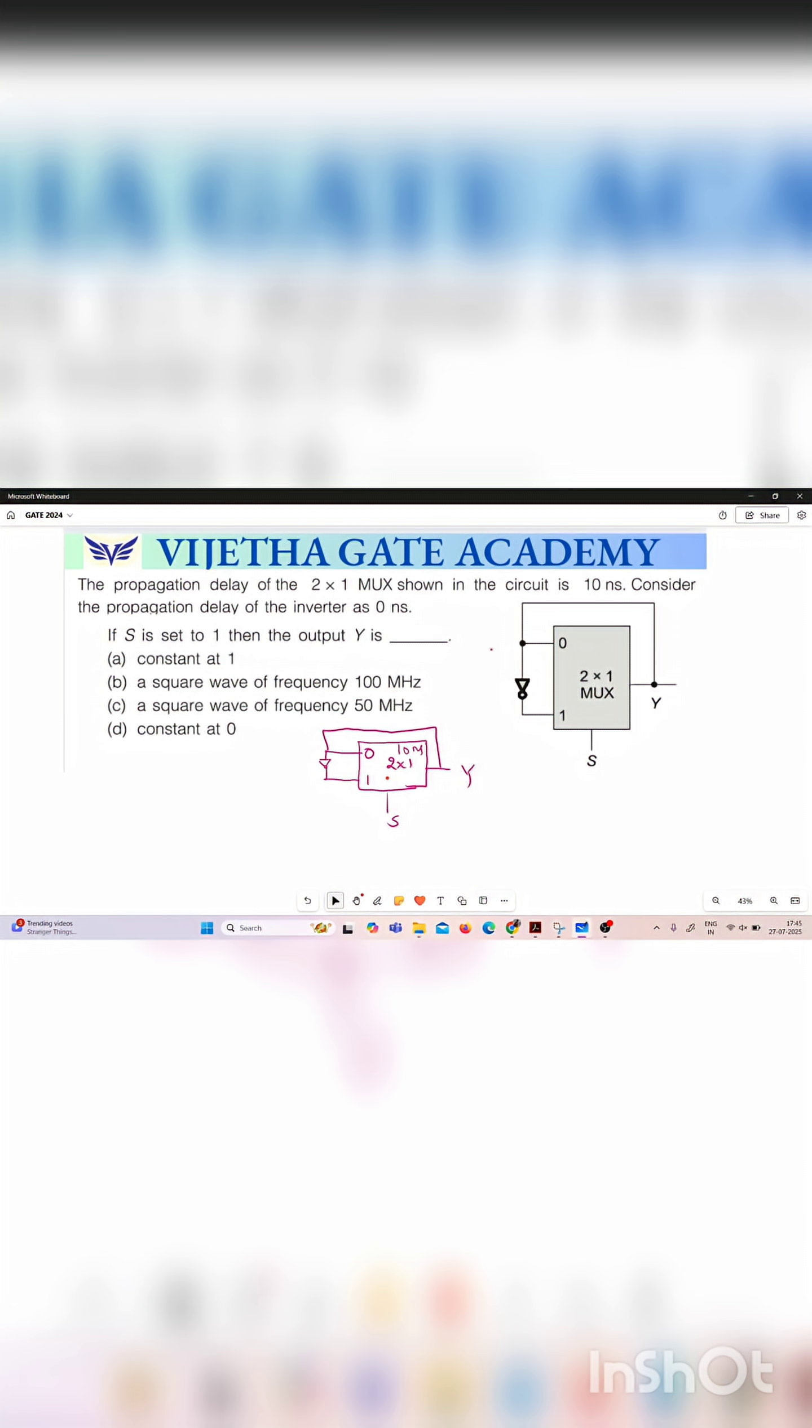In this question a 2 by 1 mux is given and it is having a propagation delay of 10 nanoseconds. So what is meant by propagation delay? The time taken by the circuit to generate the output after applying the input.